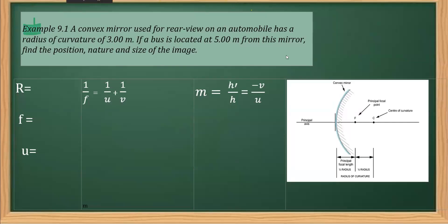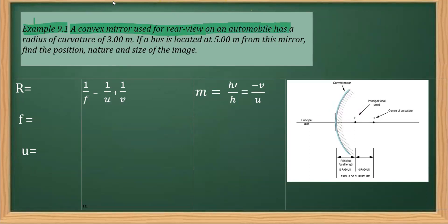This is an example taken from a textbook. This is a convex mirror used as a rear-view mirror. As you know, in automobiles we use a convex mirror as a rear-view mirror whose radius of curvature is given as 3 meters. So we can write down the information here: the radius is 3 meters.